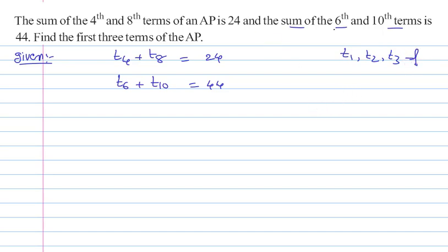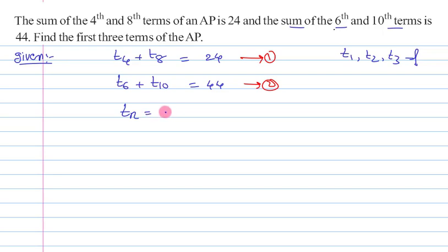Let us call the first condition equation 1 and the second condition equation 2. Using these two equations, we need to find the first, second, and third terms. To solve this, we use the important formula for the nth term of an AP: tn = a + (n − 1)d. I am going to apply this formula in both equations.